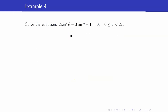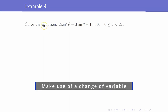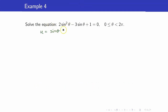In our previous examples, we solved equations by isolating one trigonometric function value on one side. Now in this case, we still have one trigonometric function — sine of theta — however, we have a quadratic equation involving sine theta. What you need to do is transform this into its quadratic form using a change of variable. Let u be equal to sine of theta, because we have sine squared theta and sine theta. So this equation becomes 2u squared minus 3u plus 1 is equal to 0 — just a quadratic equation.